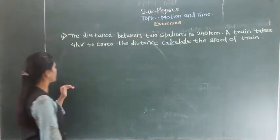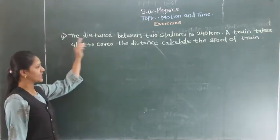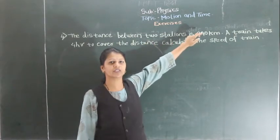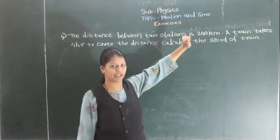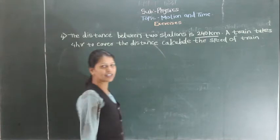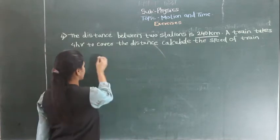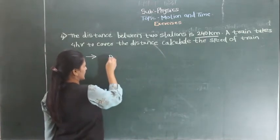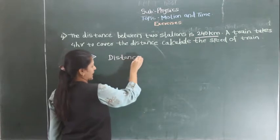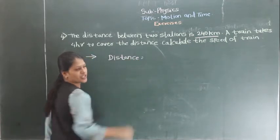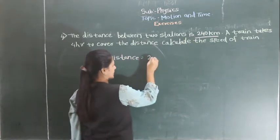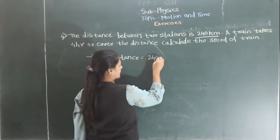See the next question. The distance between the two stations is 240 km. What is given? This is 240 km — it is nothing but a distance. So try to understand: this is 240 km, the distance is given.